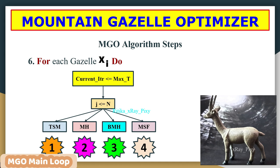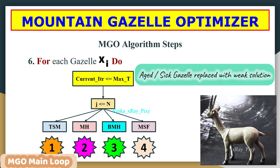In the bachelor males herd, young male gazelles are not mature enough to reproduce, so they represent other potential solutions. Strong male gazelles with good solutions engage in both exploration and exploitation phases. Solutions are compared and strong gazelles with effective solutions are kept, while weak solutions — representing sick or aged gazelles with lower fitness values — are eliminated from the population.